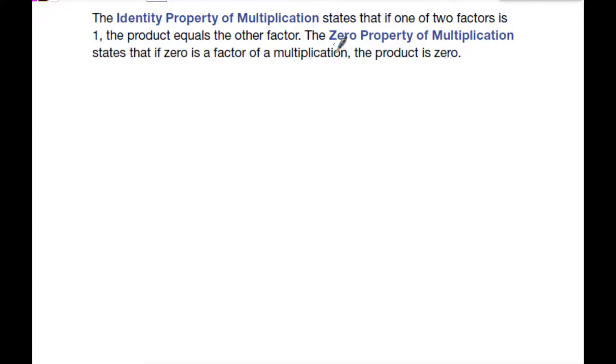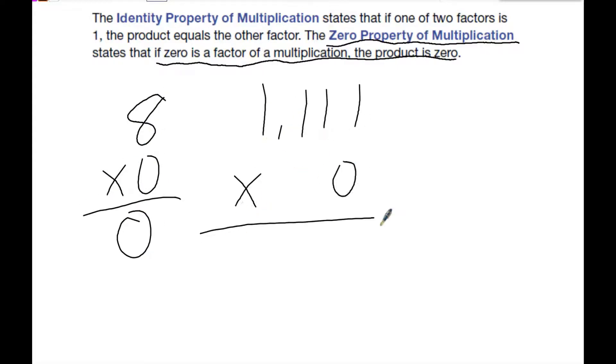The second property is the zero property of multiplication. This one says if zero is a factor, then the product is always zero. So eight times zero is zero. 1,111 times zero is zero.